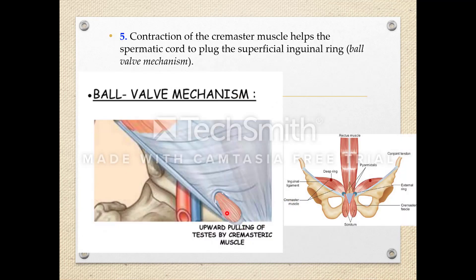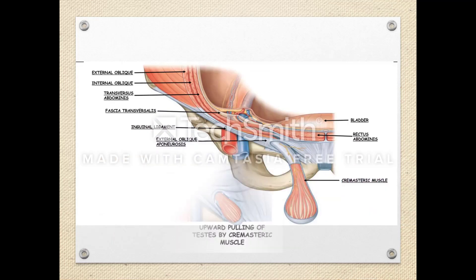Mechanism number three: the ball valve mechanism. The cremaster muscle contracts and helps the spermatic cord plug the superficial inguinal ring. This is the ball valve mechanism — when the cremaster muscle contracts, the spermatic cord blocks the superficial inguinal ring.